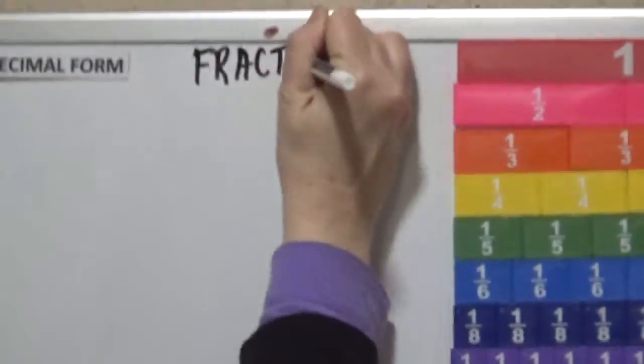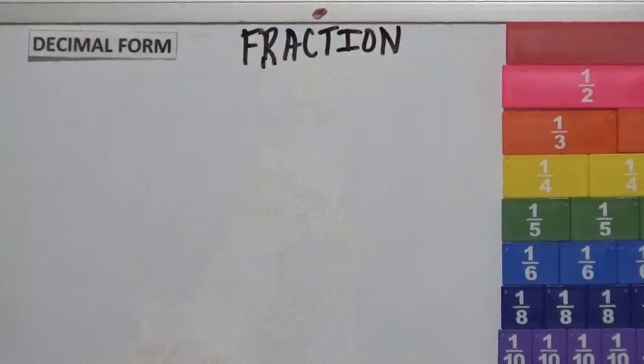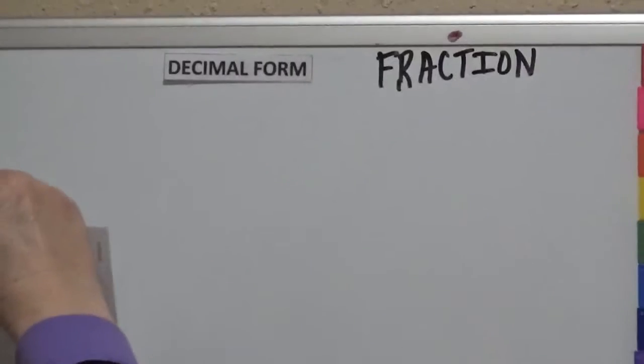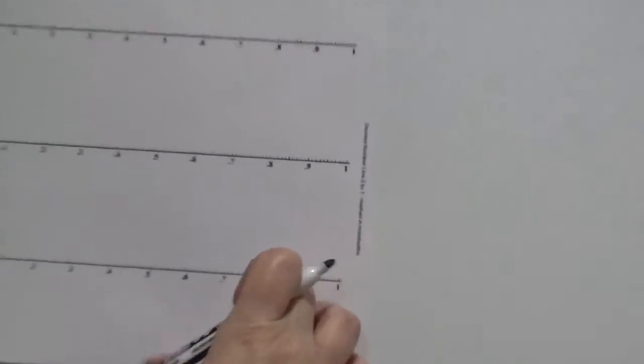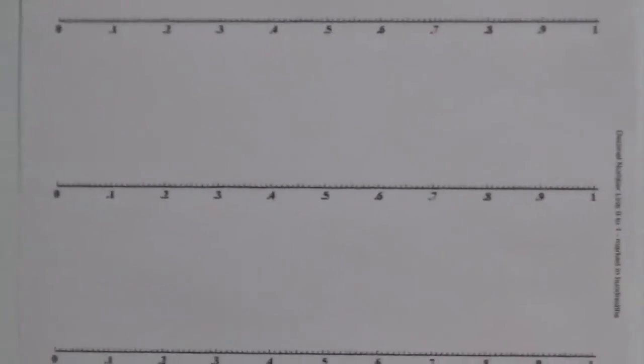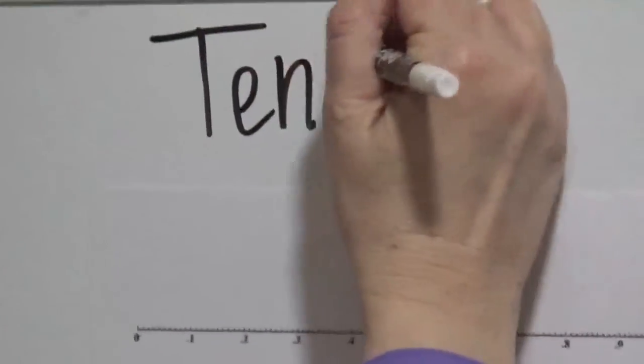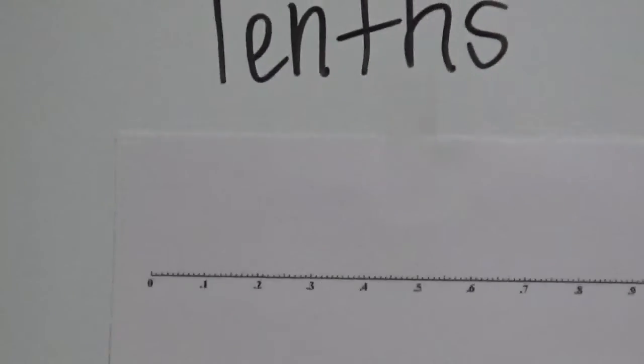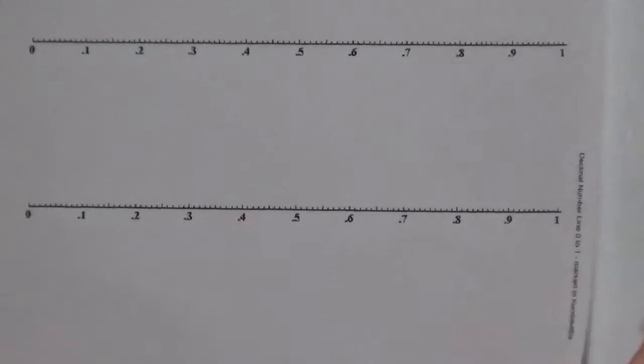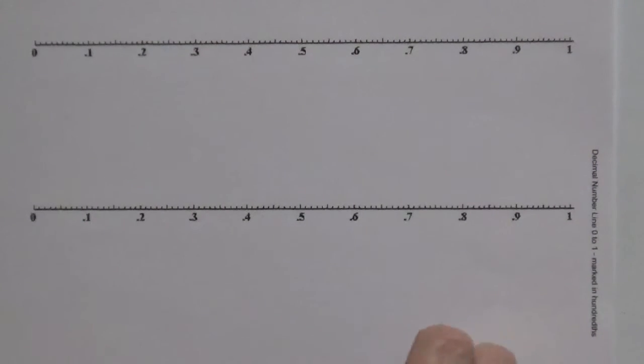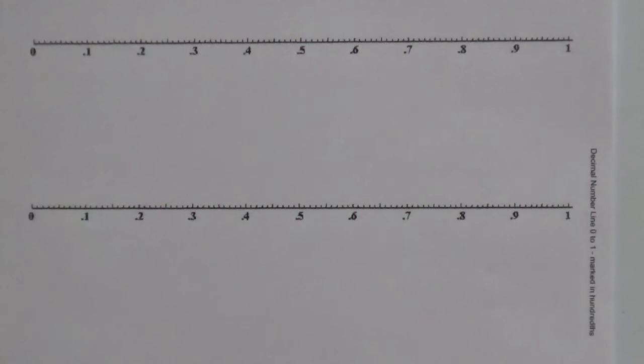So we just did the hundredths. Now we're going to do the tenths. And of course I wrote erase the fraction because we have to represent that too. So we did the hundredths. Now we're going to do the tenths. So we did the pennies and now we're going to locate the dimes on the number line.